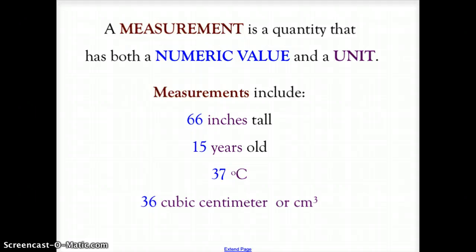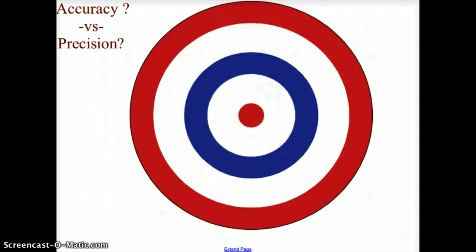When we're dealing with measurement, we want to deal with the ideas of accuracy and precision. So when dealing with accuracy, we're going to have this target here, and we're going to have five different shooters shoot at the target. So the first shooter, not very good, pretty scattered all over the place.